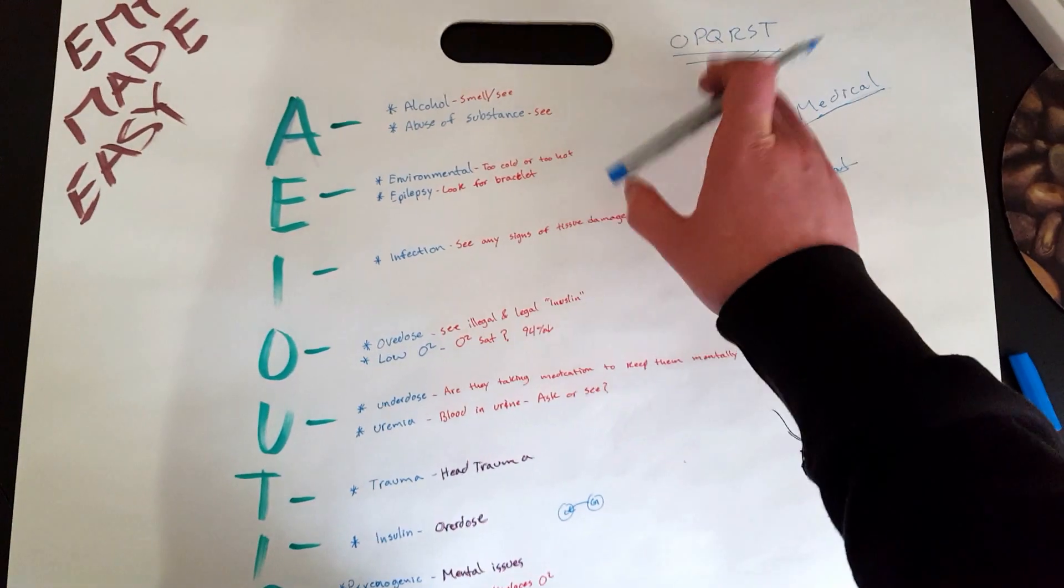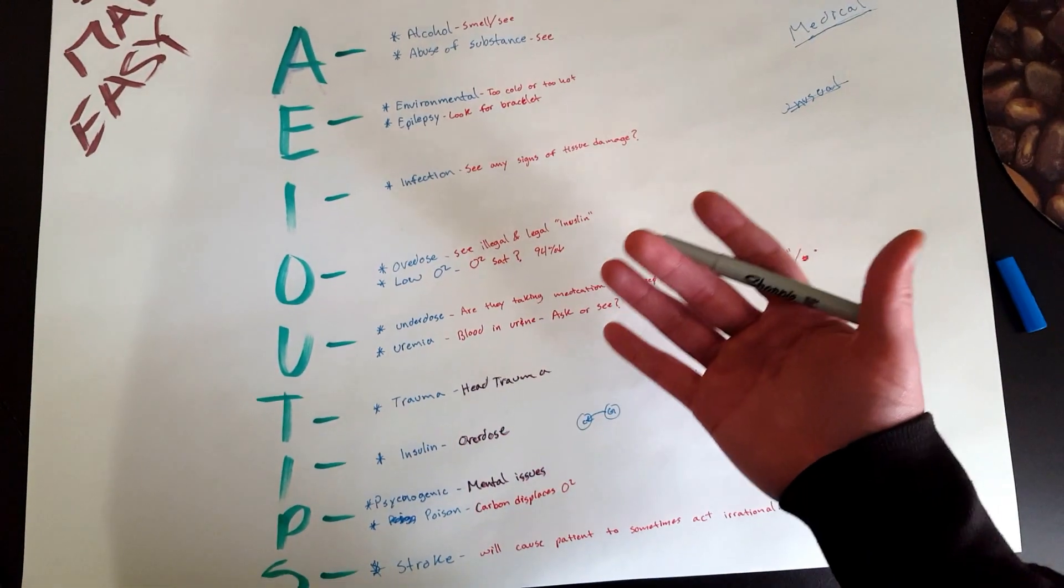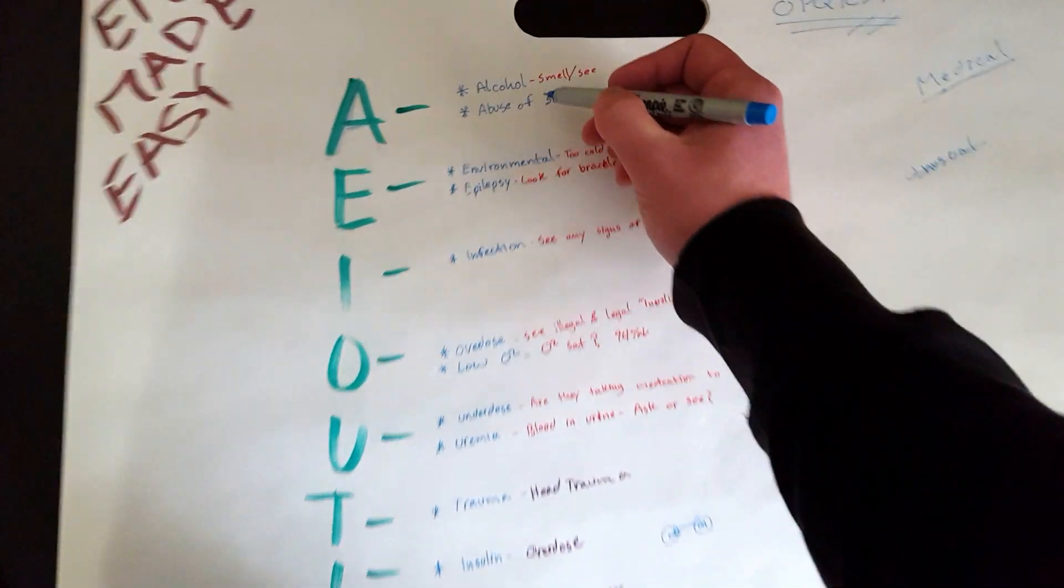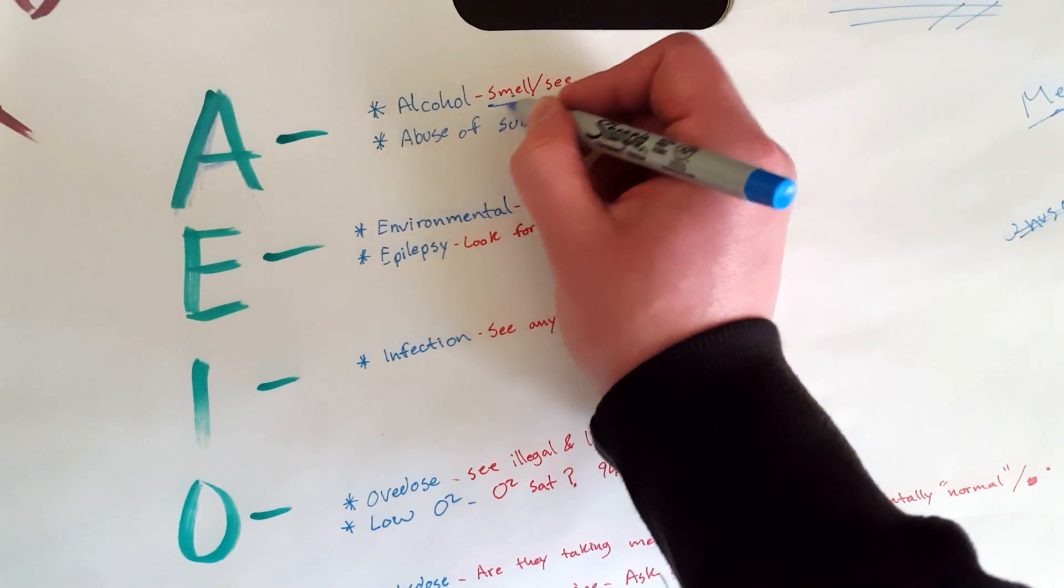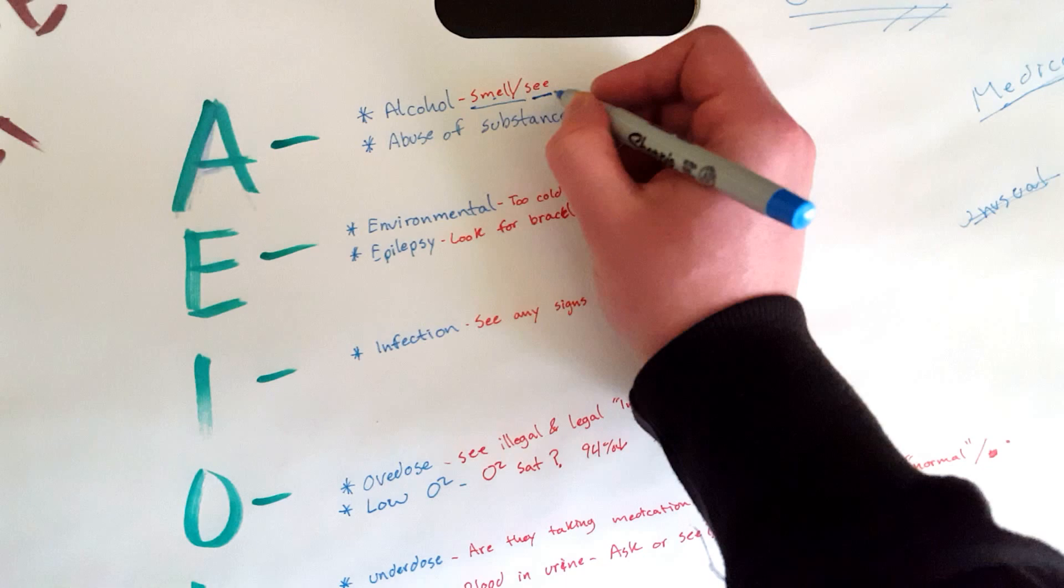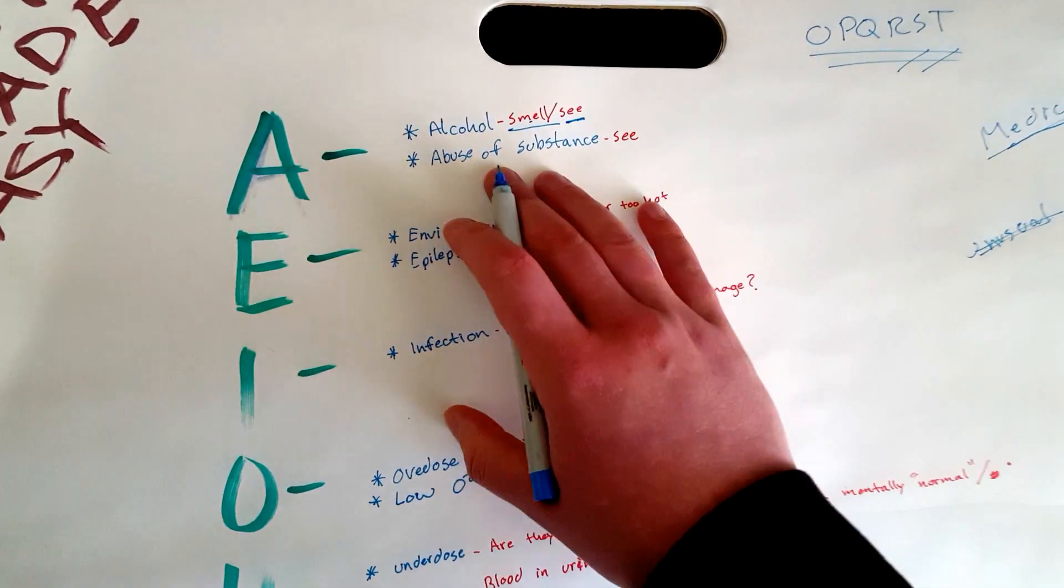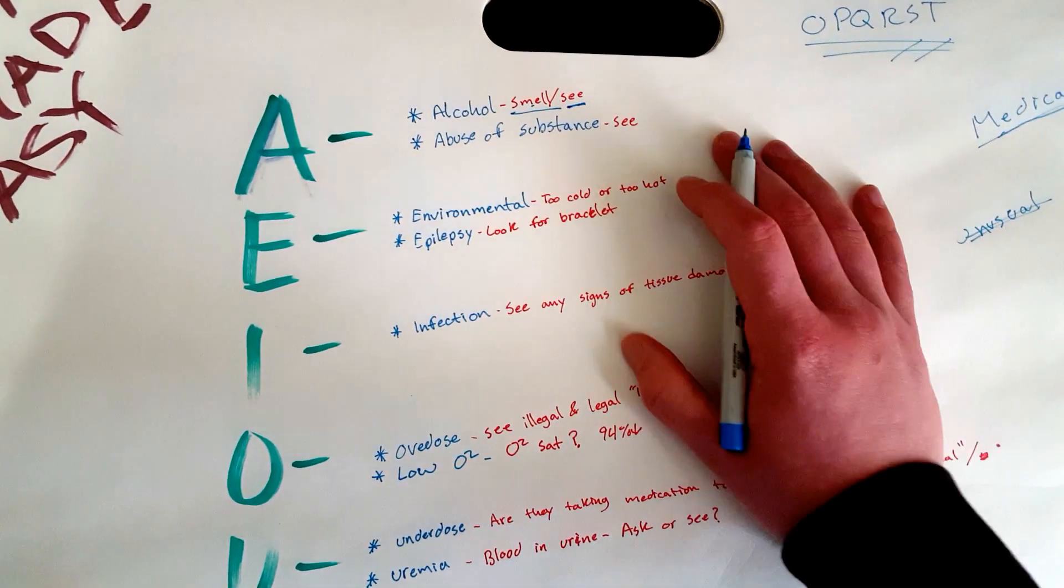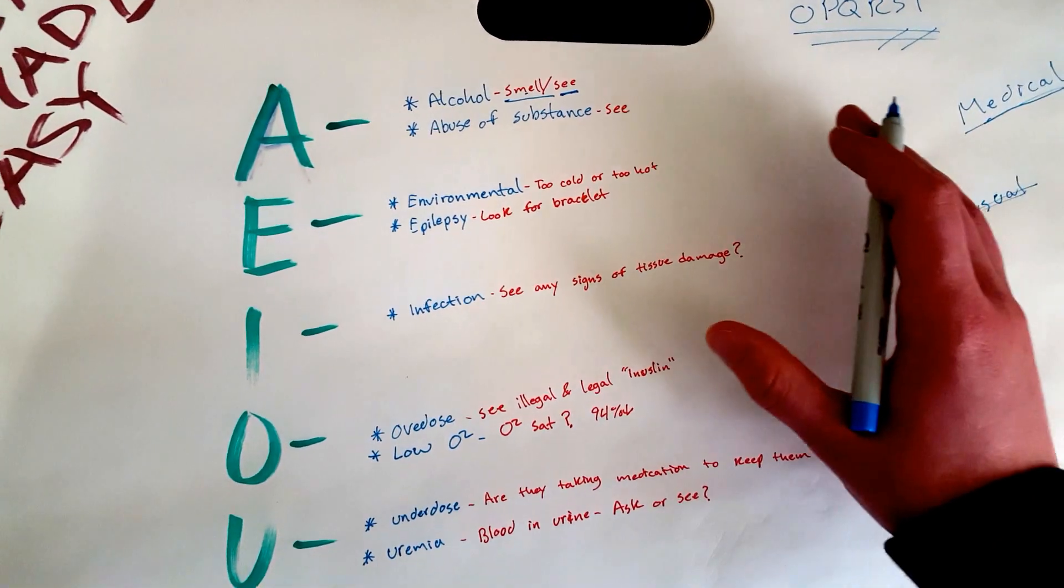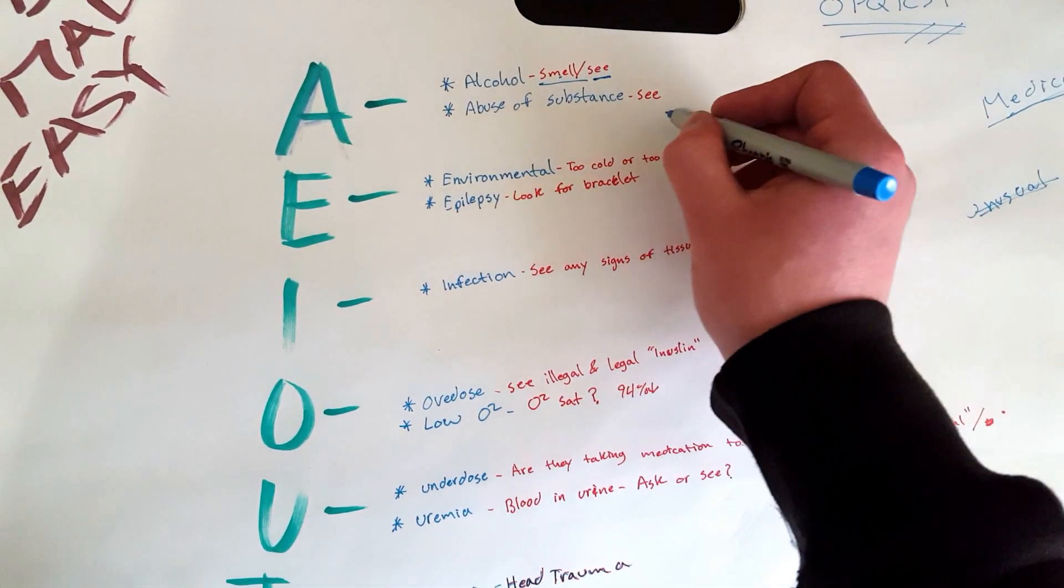First, A: Do I smell, do you smell any alcohol? So I would ask the proctor, okay, do I smell any alcohol? Do I see any containers, any beer bottles, any liquor bottles? No. All right. Substance abuse: Do I see any needles, any glass pipes, any prescriptions that are empty that were just filled two days ago or last week? No. So I'm just going to say he says no for everything.